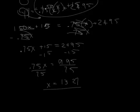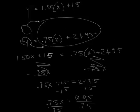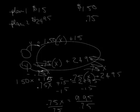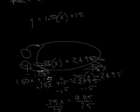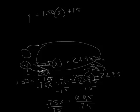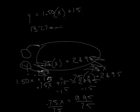Now, if you remember from way, way up in the original problem here, our X value was how many minutes we talked on the phone, and we got 13.3, I'm sorry, 27, let's make it better, 13.27 minutes. 13.27 minutes is our point where both plans are the same.